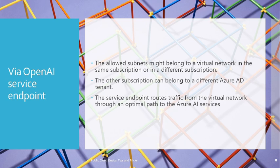The allowed subnets for service endpoints can belong to a virtual network in the same subscription, or also in a different subscription — that is also possible. The other subscription can even belong to a different Azure AD tenant as well. That means if you have two tenants, and in one tenant you have your private network or virtual network, you can connect to the OpenAI service in the other tenant and restrict that subnet from the OpenAI service firewall.